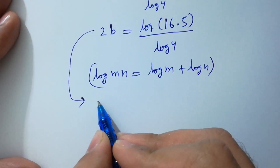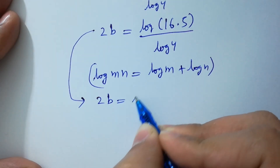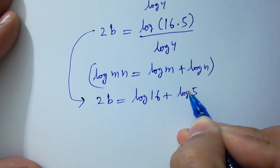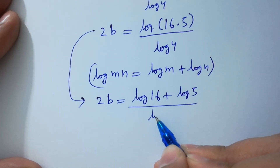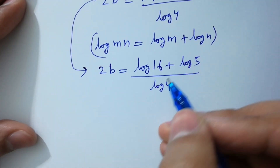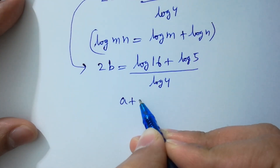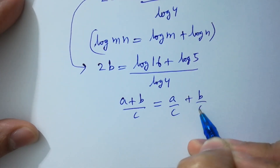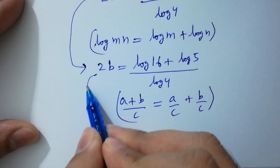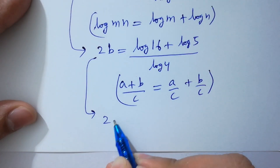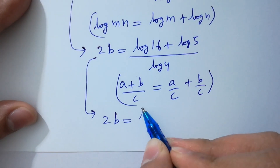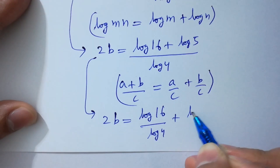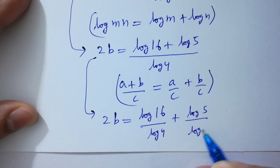It can be written as 2B equals log 16 plus log 5 over log 4. Since A plus B over C equals A over C plus B over C, so 2B equals log 16 over log 4 plus log 5 over log 4.